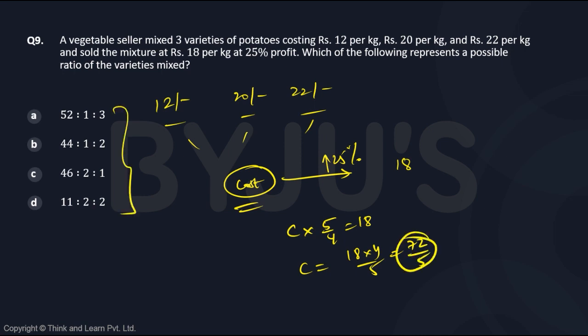Now we have to look at which of these four option ratios can I take such that I get the final mixture as 72 by 5. So you can check with each option. I will check for the direct answer.